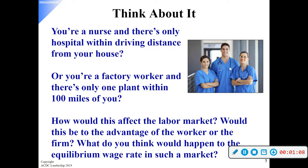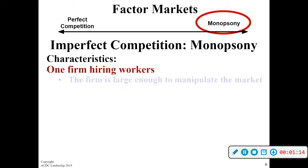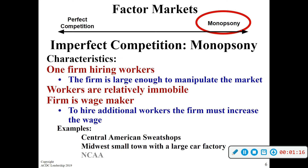There is one firm hiring workers. Workers are relatively immobile, meaning they can't easily go find other jobs. The firm is a wage maker, so ultimately they get to set the wages they are going to pay the workers. Examples include Central American sweatshops and small rural areas with one big producer.